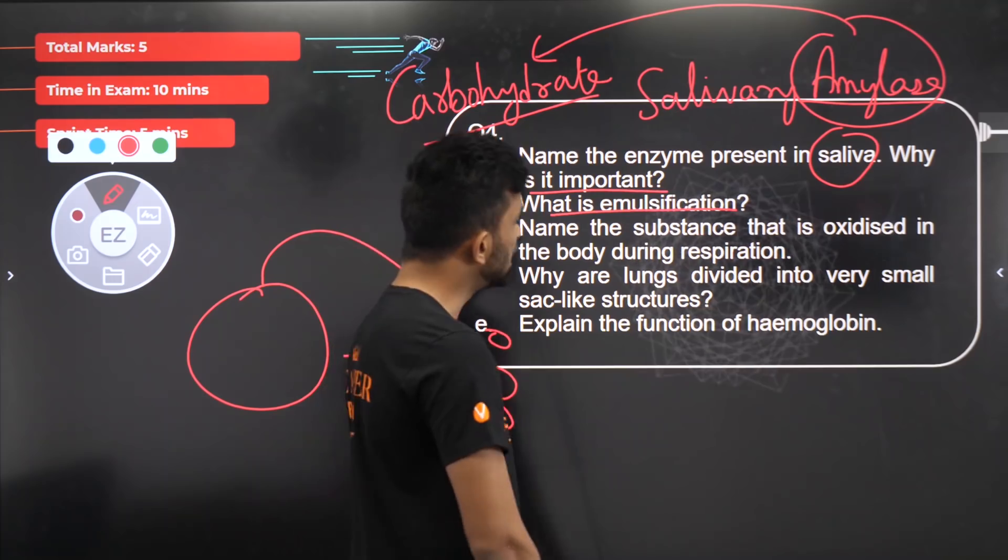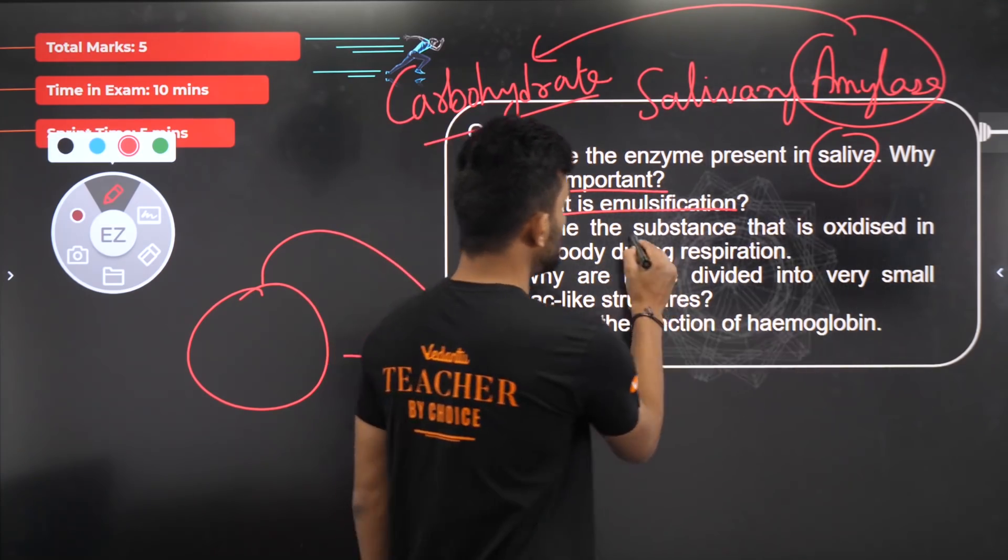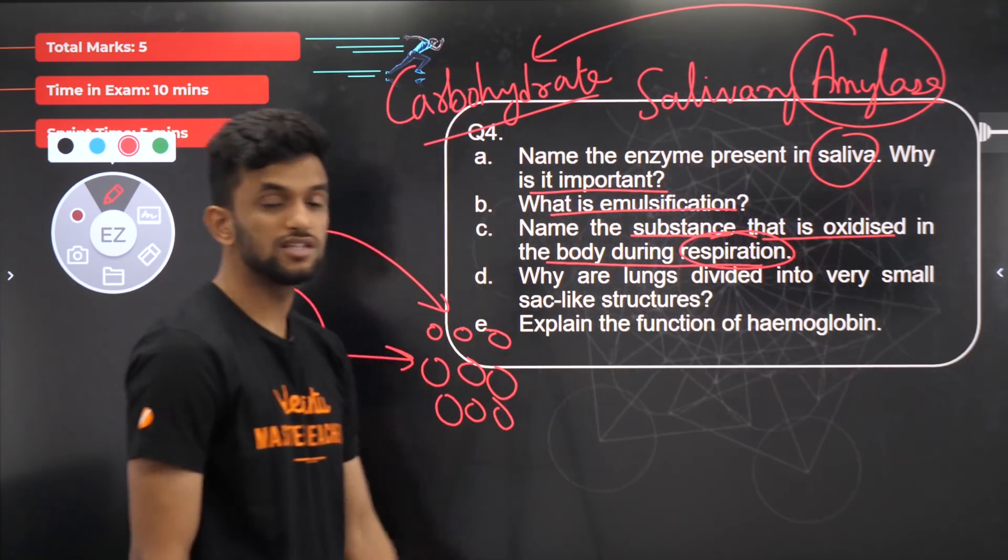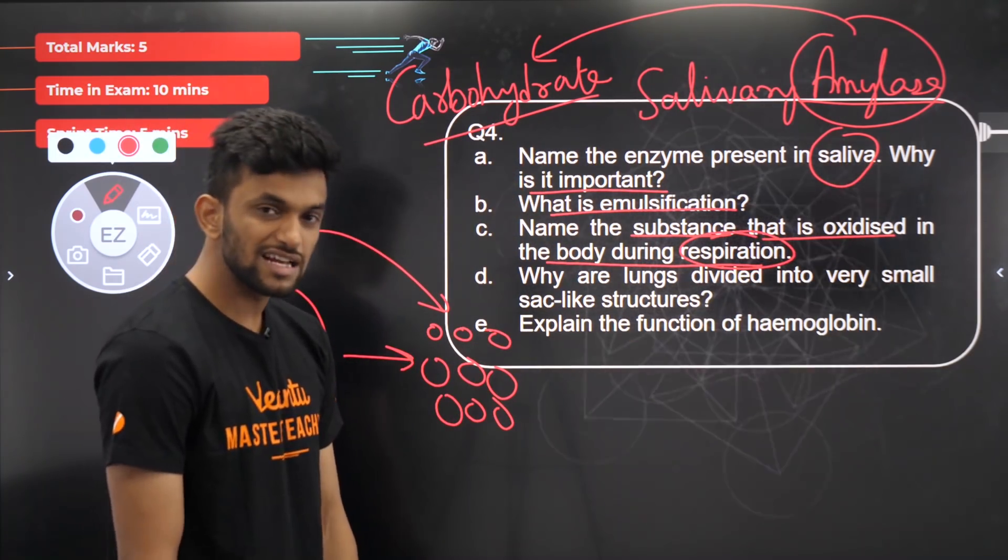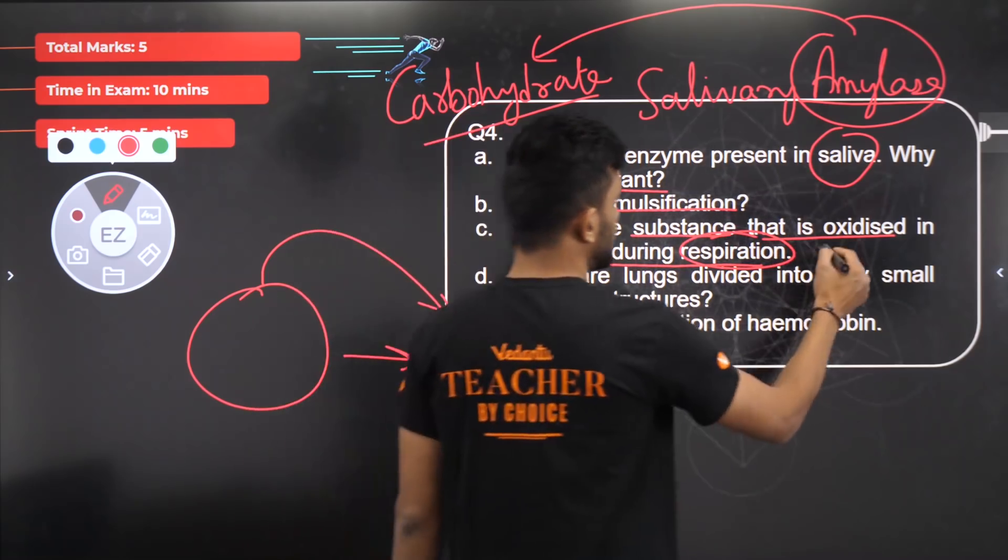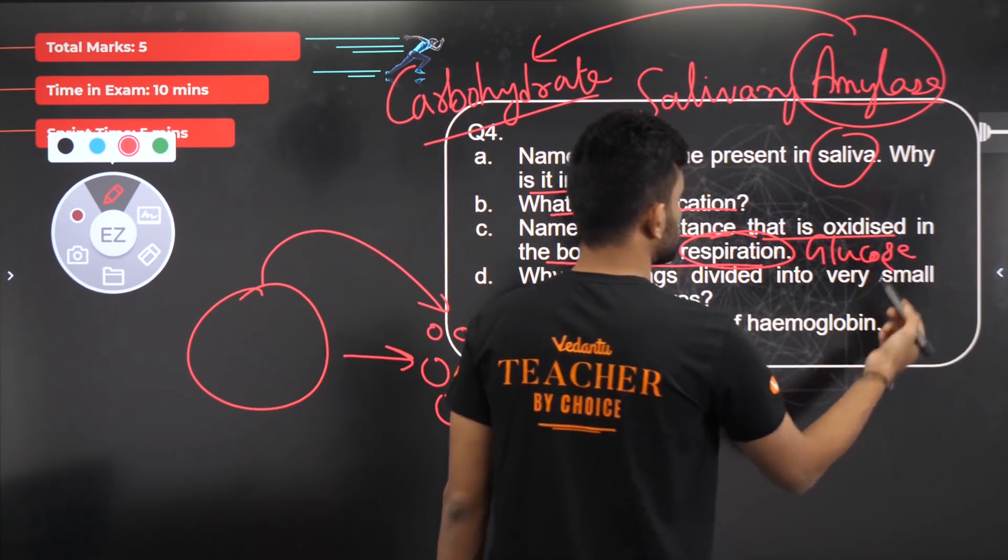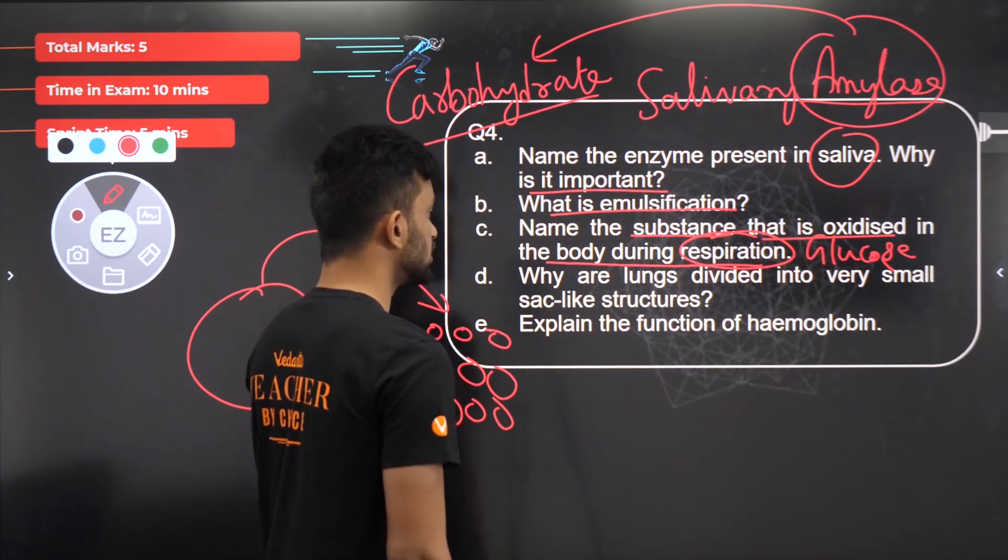Name the substance that is oxidized in the body during respiration. Easy question. What do we oxidize to produce energy? Exactly, glucose. Glucose is oxidized to produce energy.